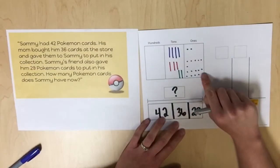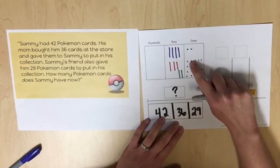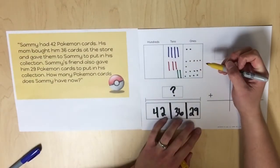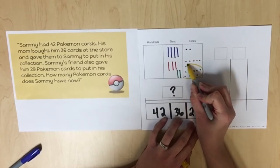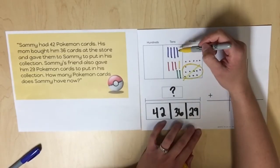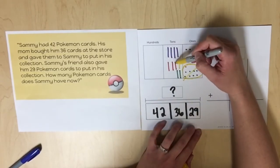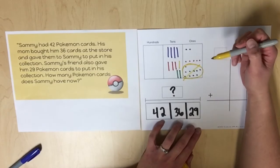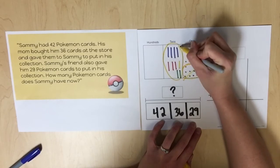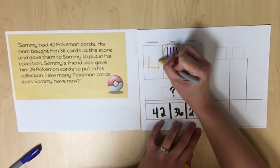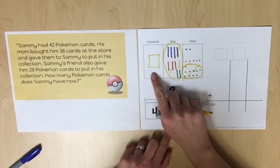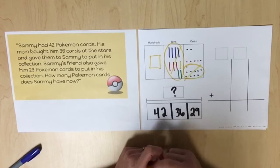When we look in the ones place, we can see we have 17 ones. Students should recognize that they can compose a 10, so we're going to regroup 10 ones to compose a 10. When we look in the tens place, we have 10 tens. Students should recognize that we can use 10 tens to regroup and compose 100. Based on our pictorial model, we can see that Sammy has 107 Pokémon cards.